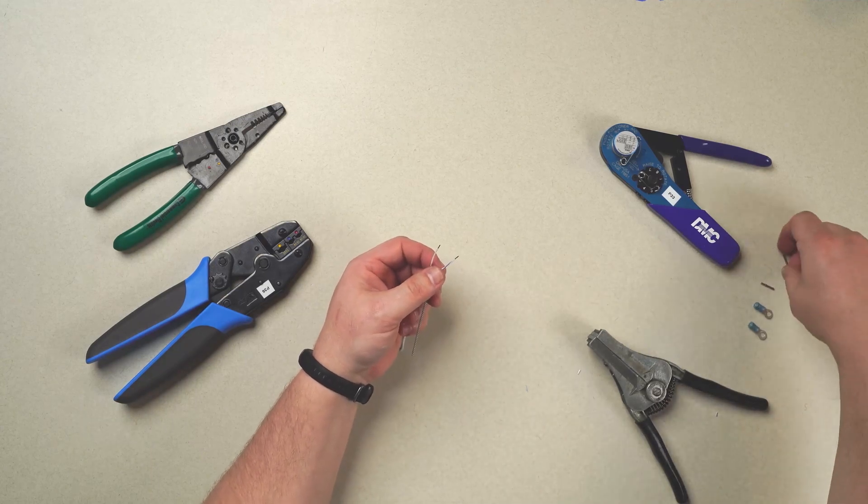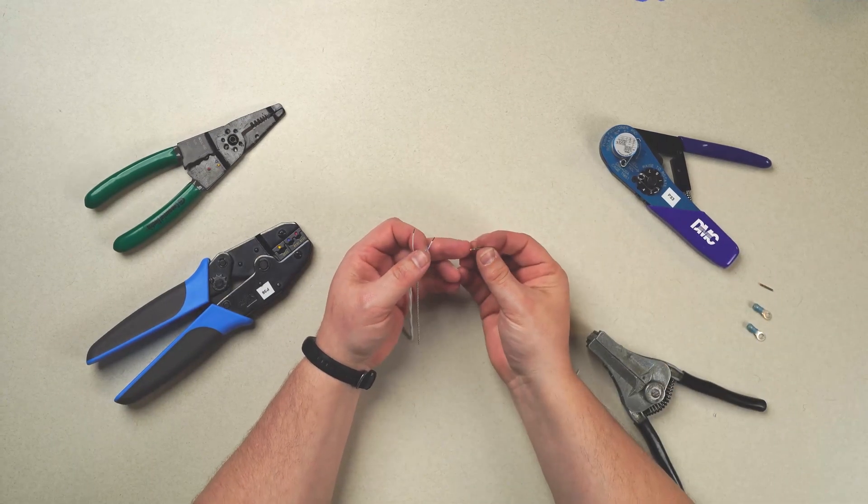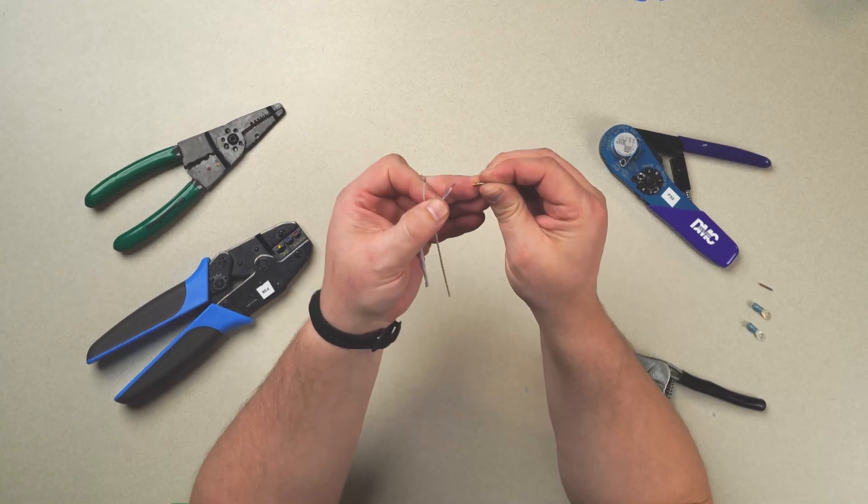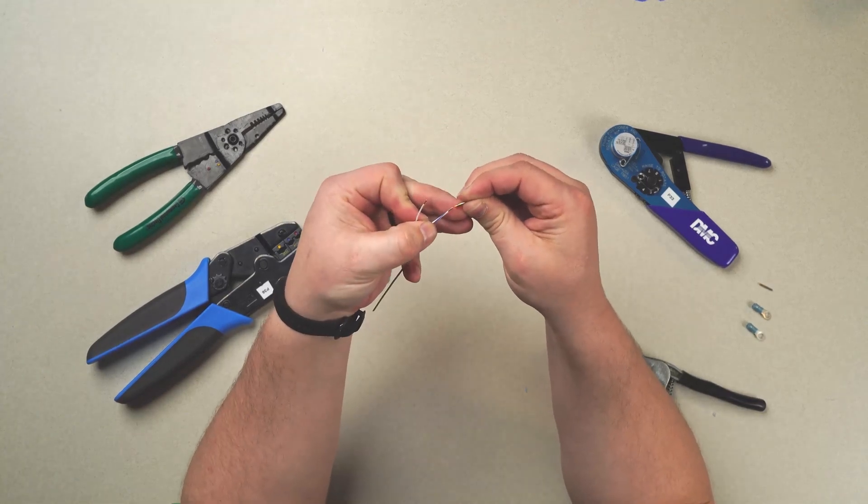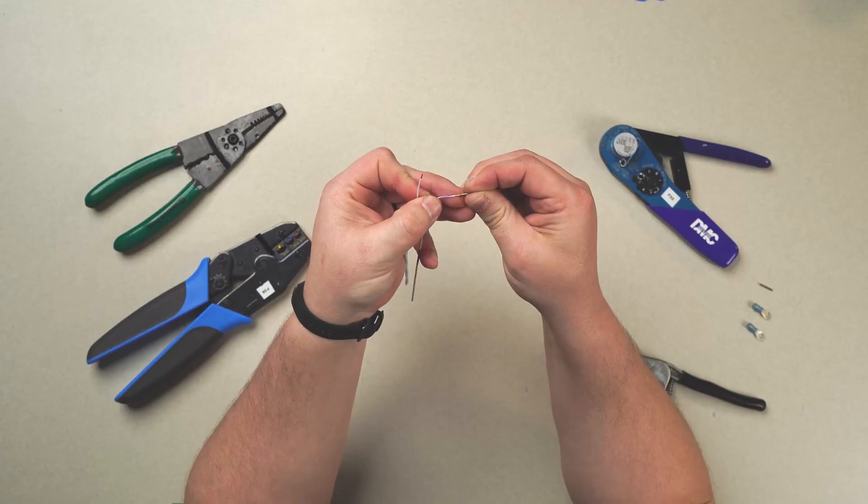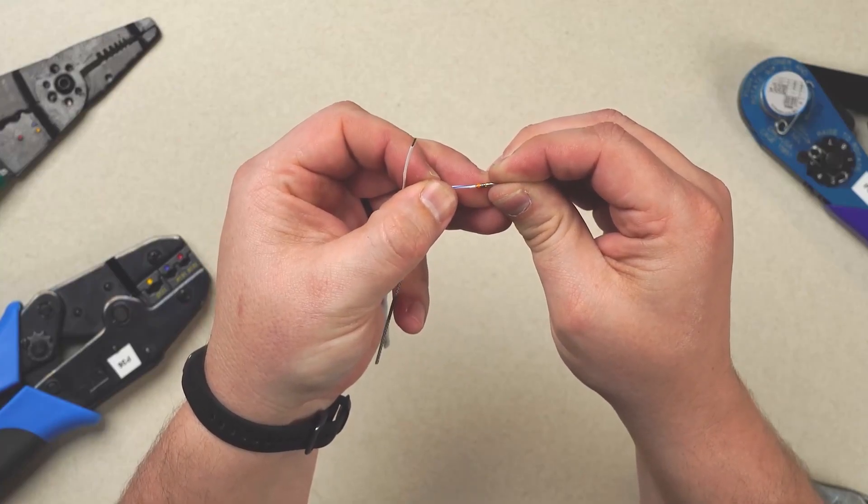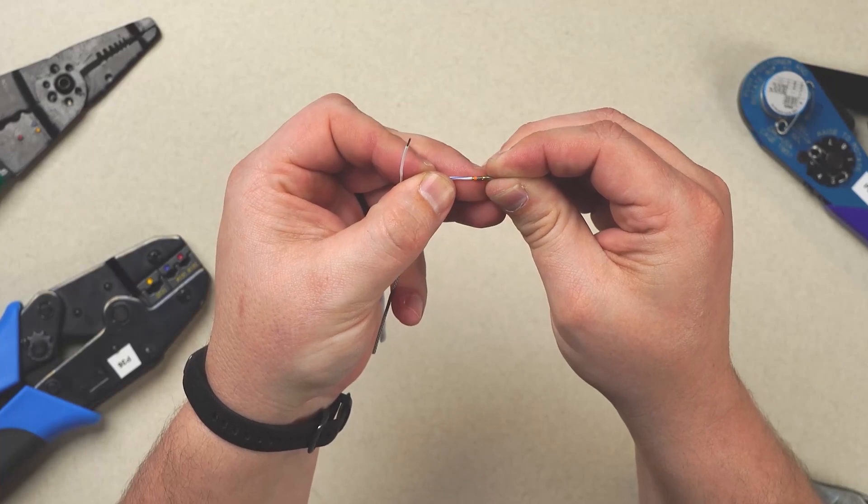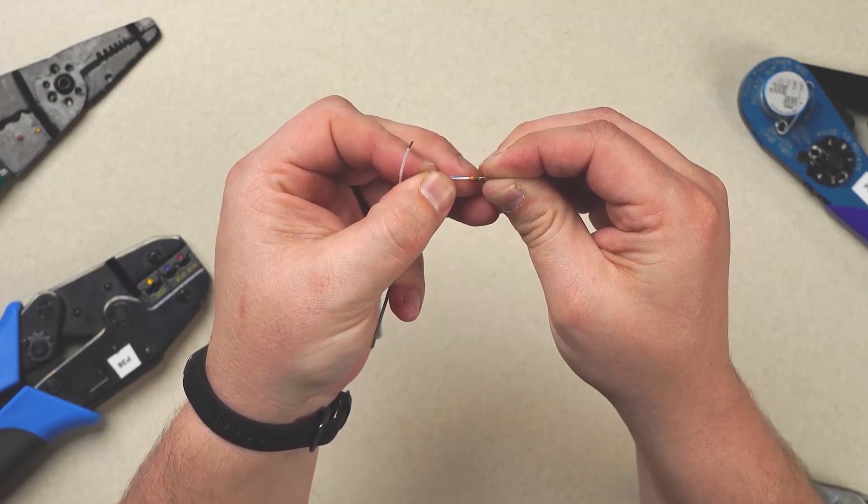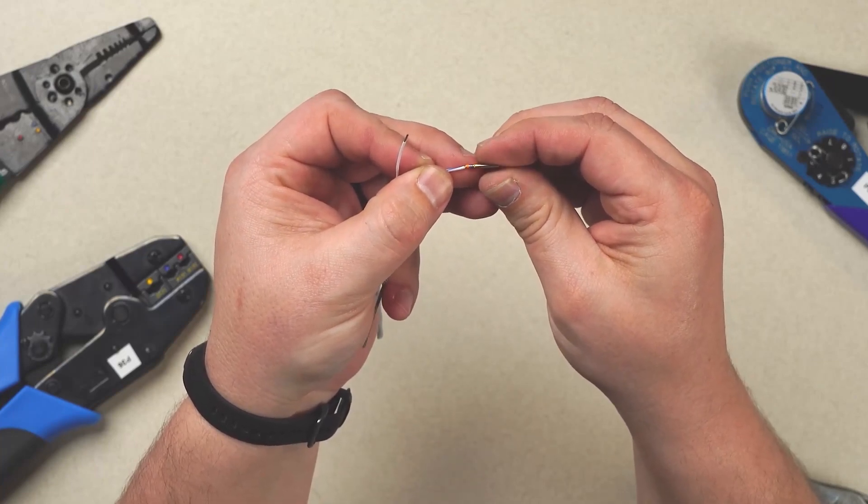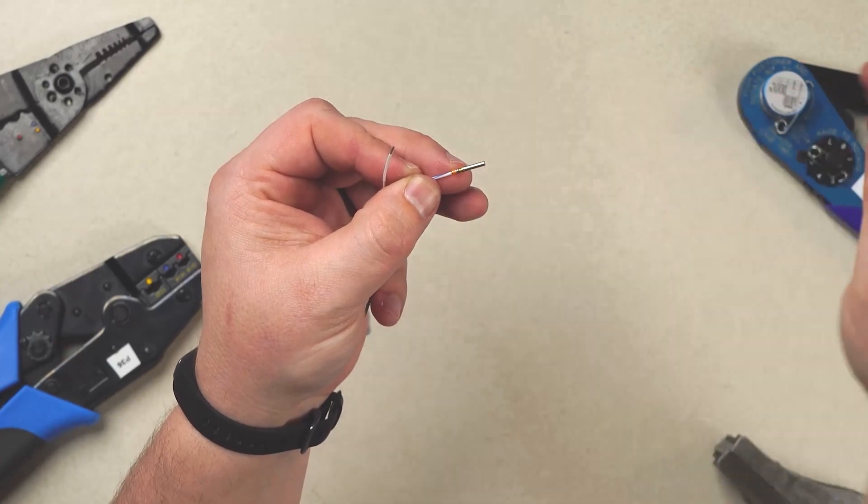Establishing the proper length of the strip, you can actually tell by utilizing the window here on your pin. And you'll see that the wire actually slides in and stops. And there's still just a squish of exposed wire before you see the insulation. So we know we're bottoming out in the pin or socket correctly.